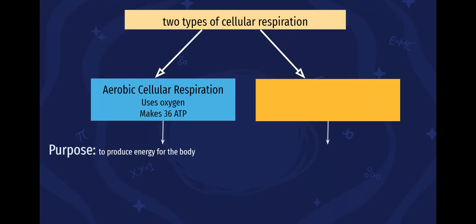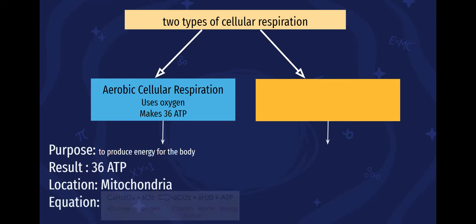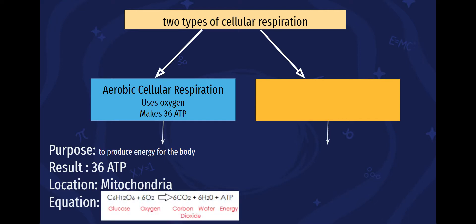The purpose behind it is to produce energy for our body. It results, and you are going to need to know this, in 36 ATP. And it's located in our mitochondria. We're going to get very specific in our drawing, but for now, just mitochondria is fine. The equation is the one that we know cellular respiration to be: glucose plus oxygen gives us carbon dioxide, water, and energy.